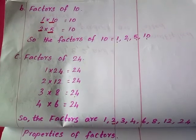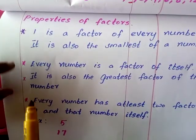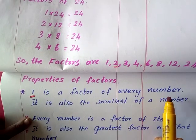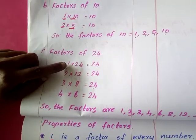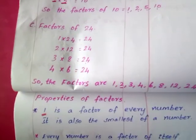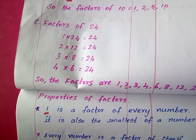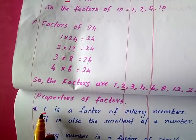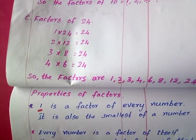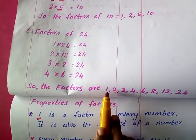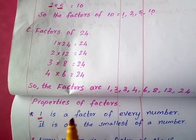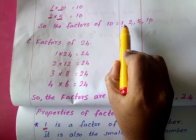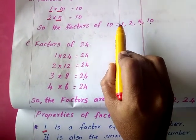So this is all about factors. There are a few properties of factors. Look at the first property: 1 is a factor of every number. That is, when you consider these cases you can see 1 will be there in every factor list. If you take any number, 1 will be one of its factors — and it is also the smallest factor. When you check the factors of 24, 1 is the smallest factor. When you check the factors of 10, 1 is the smallest factor there also.